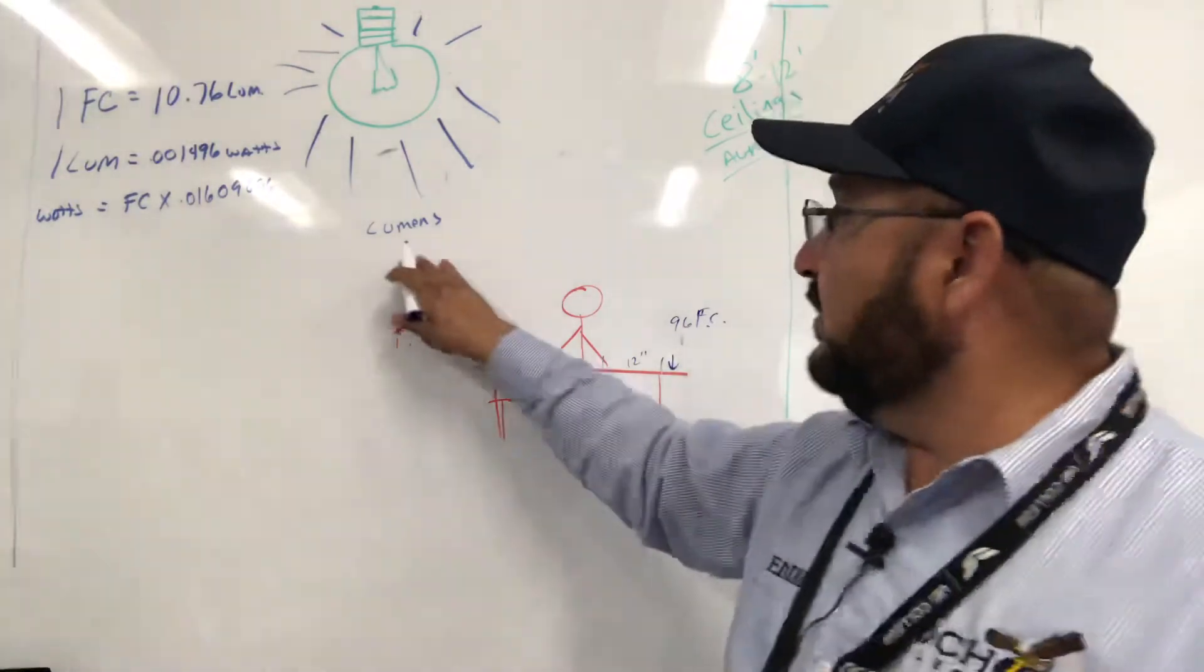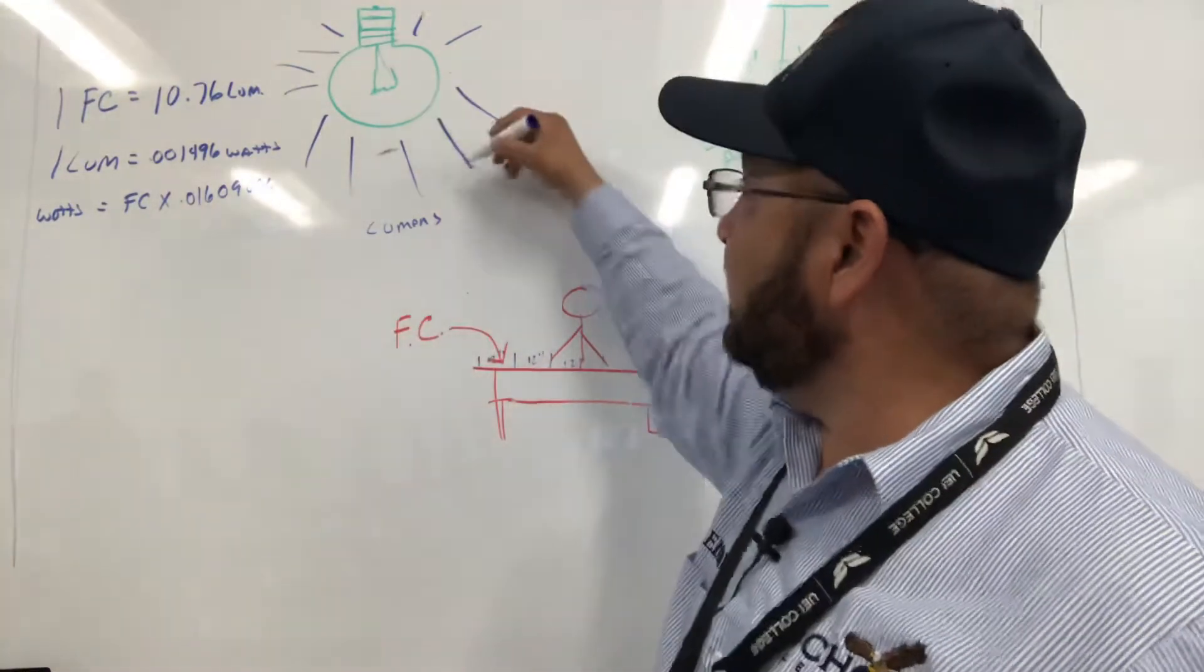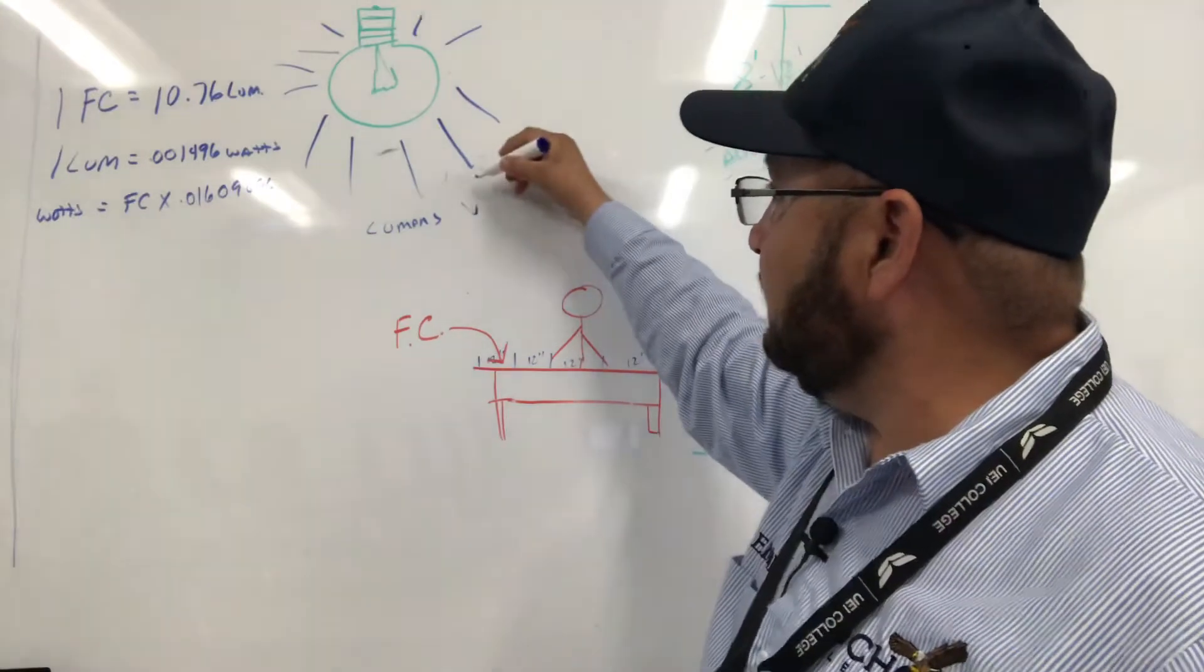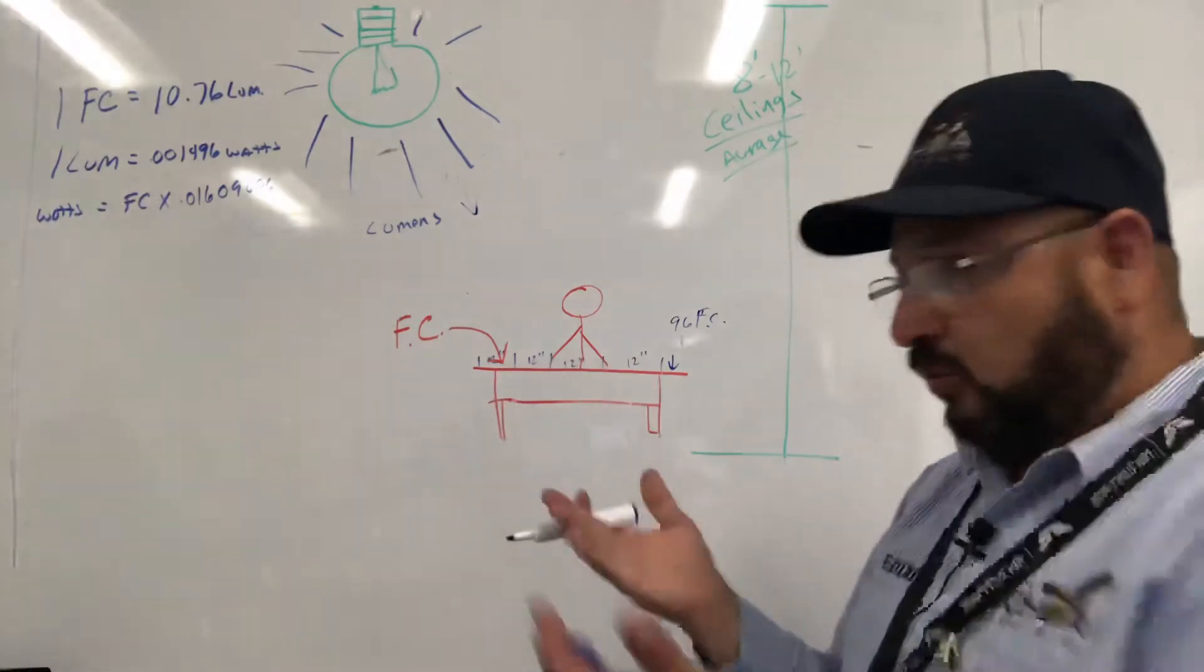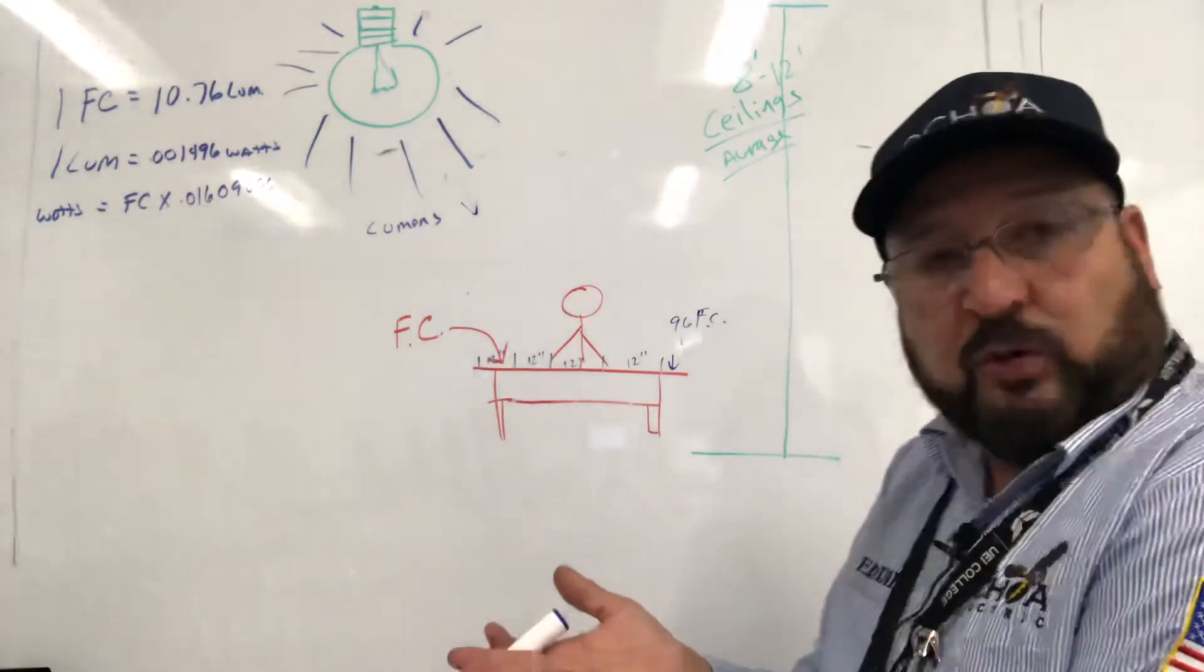So lumens is how much light is being emitted by the light fixture, whatever it is. Foot candle is how much light we see on a surface or what we're working at.